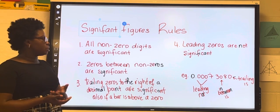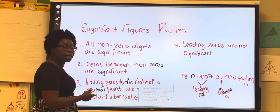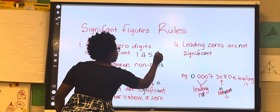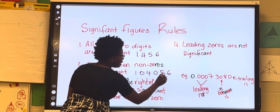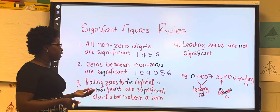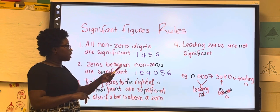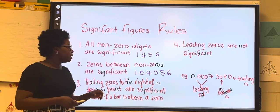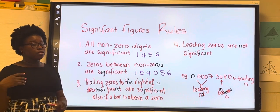Zeros between non-zero numbers are also significant. When you look at this example, there are zeros between non-zero numbers. The non-zero numbers are like one, four, five, and six. Zeros between these numbers would make it like 1-0-4-0-5-6, and those in-between zeros are considered to be significant. So if I ask you how many significant figures are in the first one — 1456 — you'd say one, four, five, six: four significant figures. The one below has six significant figures.